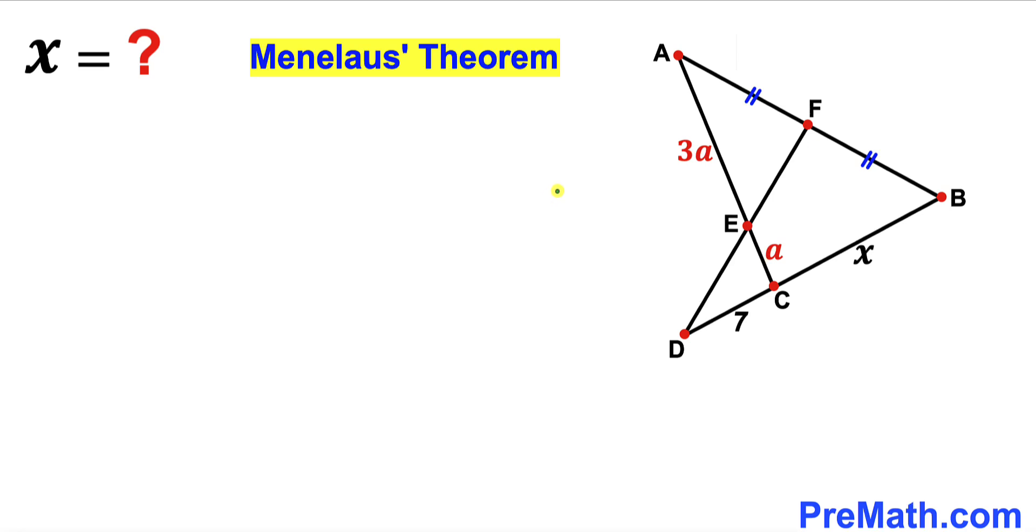Welcome to PreMath. In this video we have got these two triangles: triangle ABC and triangle BDF put together, as you can see in this diagram, such that this segment AF is equal to this segment FB.